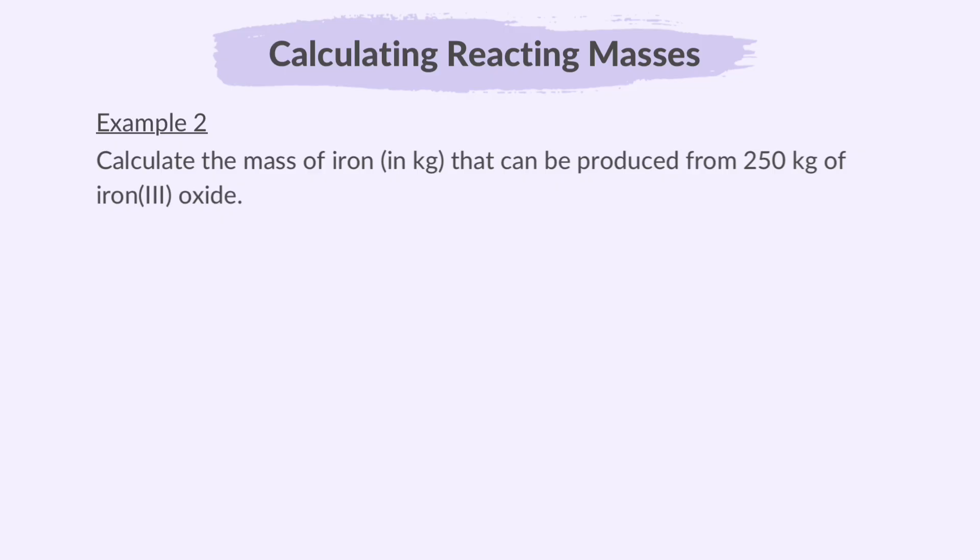Example 2: Calculate the mass of iron in kilograms that can be produced from 250 kilograms of iron 3 oxide. The balanced chemical equation for the reaction is 2 Fe2O3 to give 4 Fe and 3 O2. Here the mole ratio is for every 2 moles of iron 3 oxide, 4 moles of iron are produced. When you simplify, you get a ratio of 1 to 2.